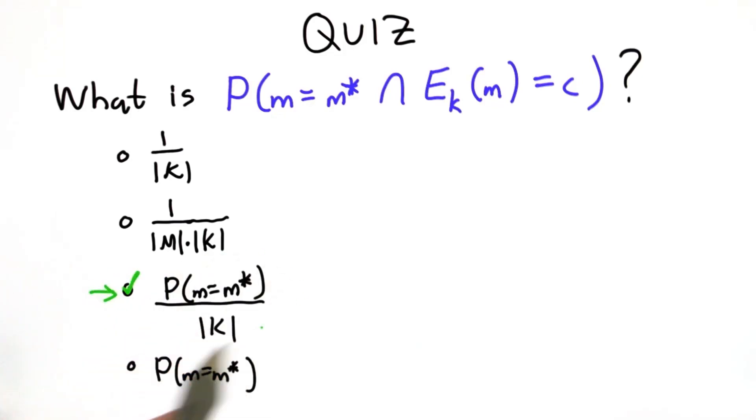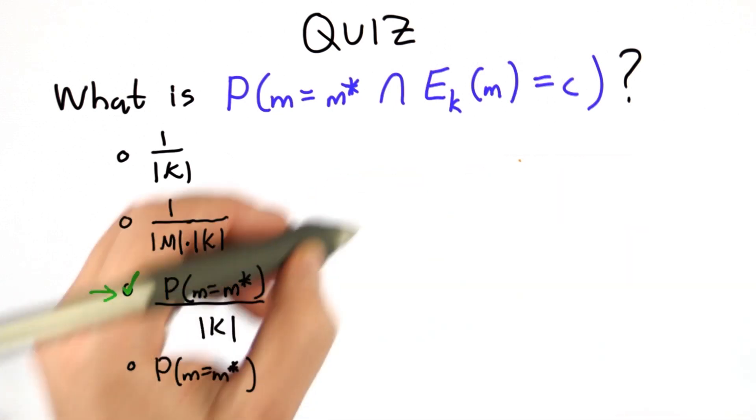The answer is this one, that it's the probability that the message is M star divided by the number of keys. To see why, let's think about our probability space.